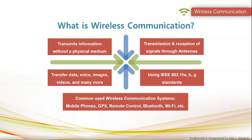Let's dig into wireless communication. It is the rapidly growing and most vibrant technological area in the communication field. It is a method of transmitting information from one point to another without having any physical medium, like wires or cables. The transmission and reception of signals are accomplished with antennas. This system uses IEEE 802.11abg standards to increase the stability of networks. By using wireless communication services, we can transfer data, voice, images, videos, and many more. Some commonly used wireless communication systems in our day-to-day life are mobile phones, GPS, remote controls, Bluetooth, Wi-Fi, and others.